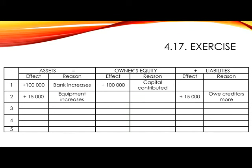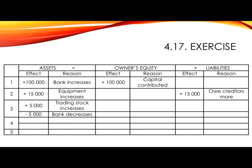Number 3. Bought trading stock for 5,000 Rand and paid by cheque. In this case, we are converting our asset cash into trading stock, which is also an asset. So in assets, we will show plus 5,000 as trading stock increases, as well as minus 5,000 as bank decreases.